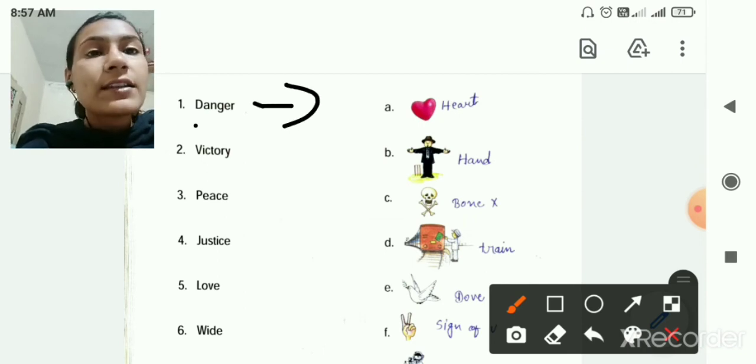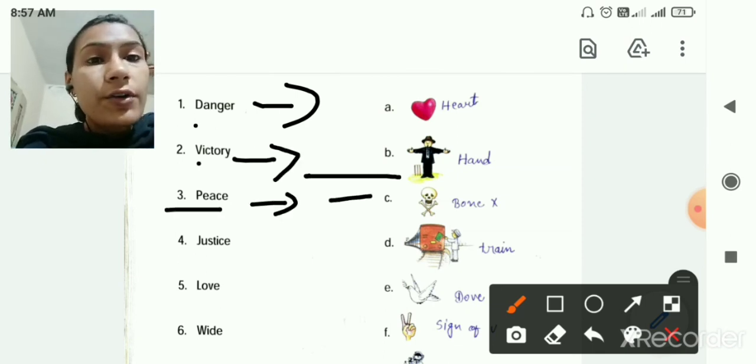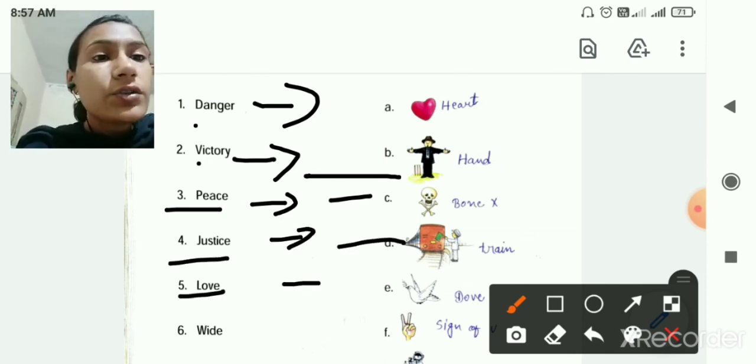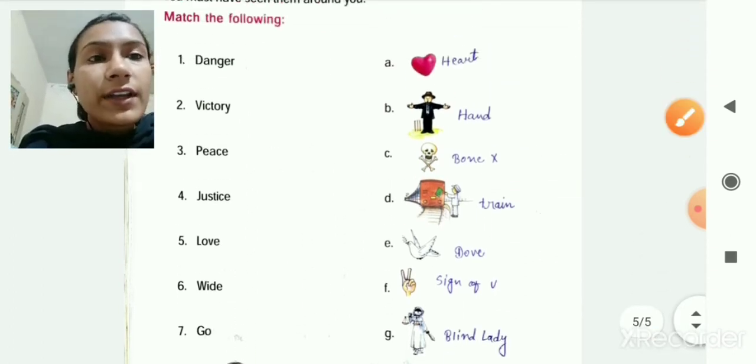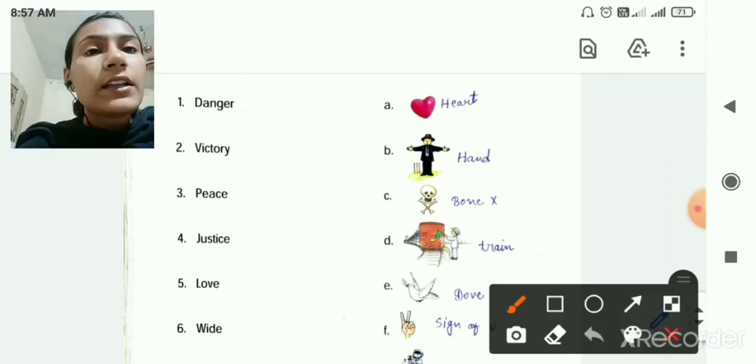So here you have to write in front of danger, you have to write born X. Then in front of victory you have to write correct answer. That means sign of V. For peace, dove. Justice, blind lady. Love, so heart. Fight, the hand. Then go, so train.